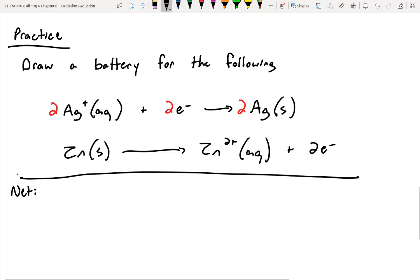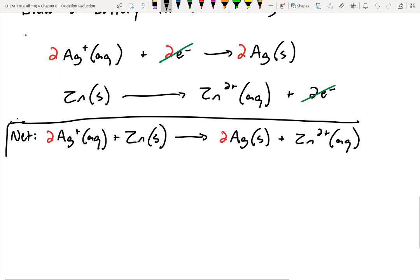So now if we think about our net equation here, we can say we had two silver cations that were aqueous, we had zinc metal on the opposite side that was a solid, and after this reaction was over, we're canceling out the electrons being gained and lost on each side. So we're going to end up with two silver atoms being formed, and we're creating a zinc 2 plus cation. That's our net equation for both of these half cells.